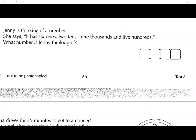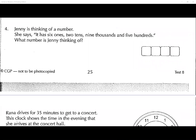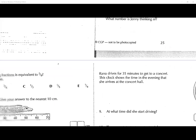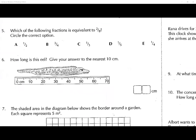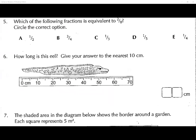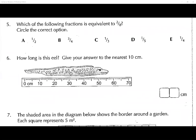Jenny's thinking of a number. It has six ones, two tens, nine thousands, and five hundreds. They're giving it all in random order — you've got to put them in the right order. So you have nine thousand, five hundred and twenty-six.